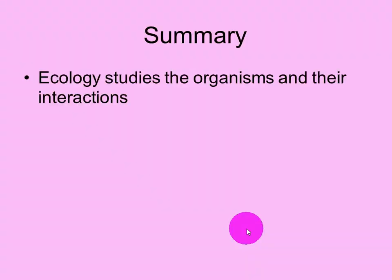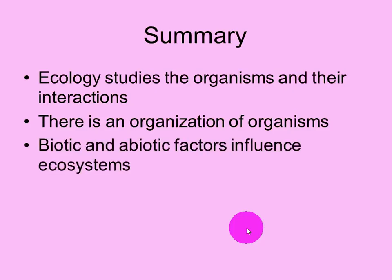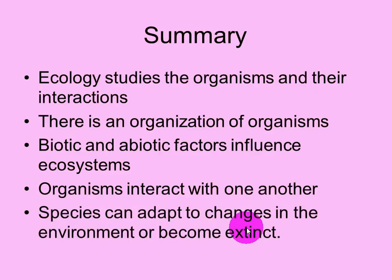To sum up this podcast, we're looking at ecology and the many mini-topics it covers — ultimately how organisms interact with each other and with their surrounding environment. When we go from the bottom up, we can organize different groupings to help us better study them. Biotic living factors and abiotic non-living factors influence ecosystems. Organisms interact with each other through competition, predation, mutualism, commensalism, and parasitism. Species can adapt to changes in the environment, or where they cannot adapt, they can become extinct.